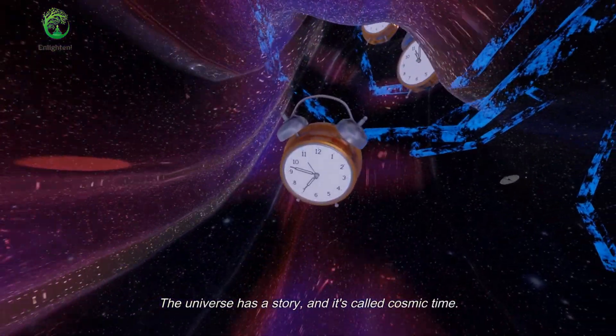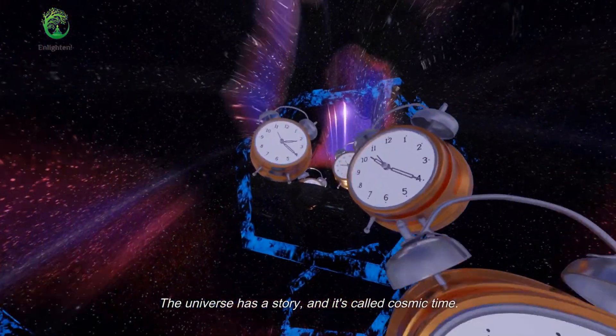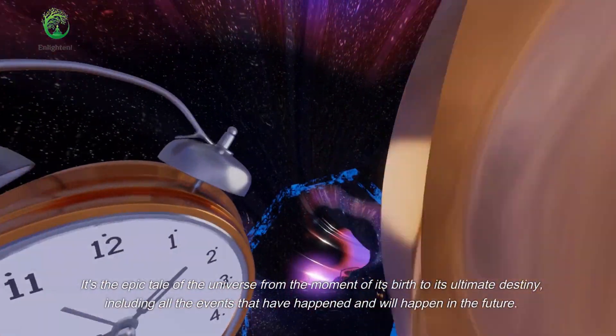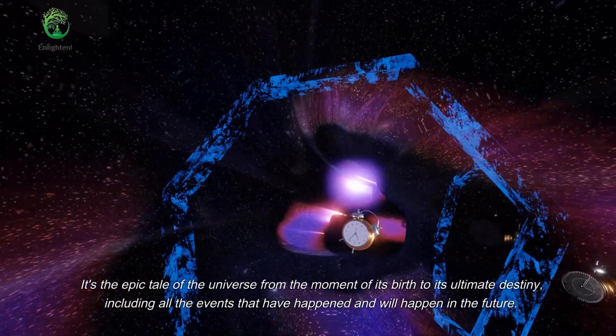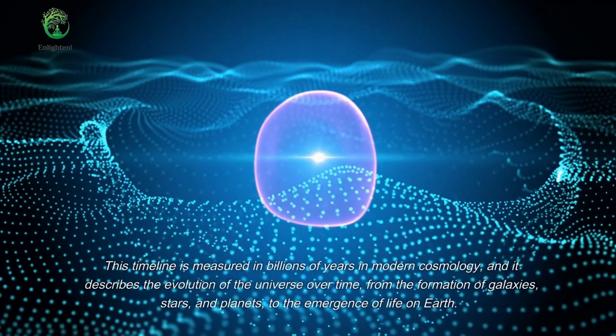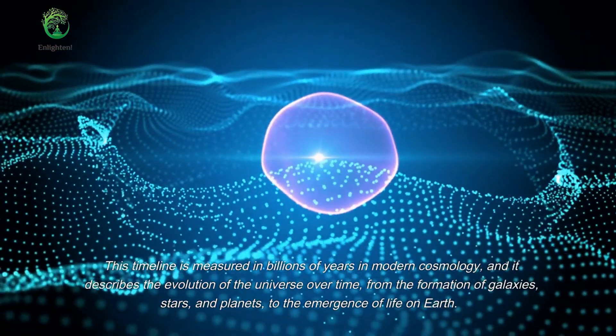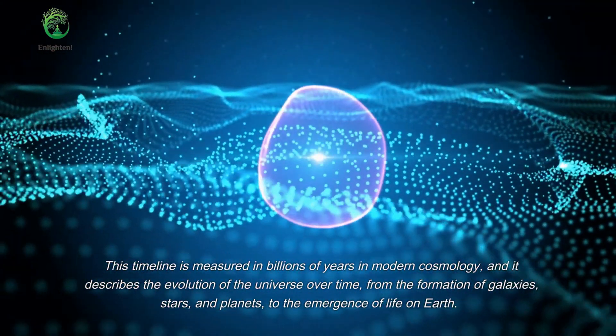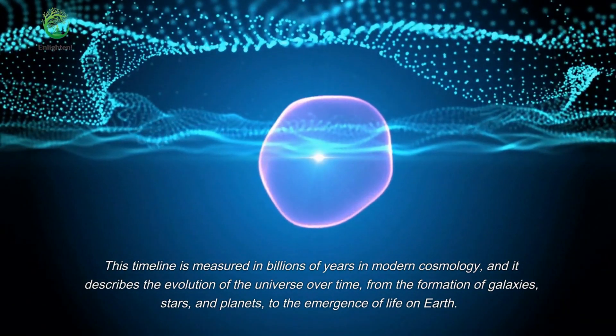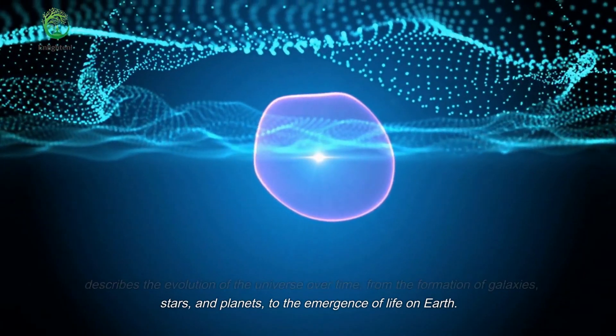The universe has a story, and it's called cosmic time. It's the epic tale of the universe from the moment of its birth to its ultimate destiny, including all the events that have happened and will happen in the future. This timeline is measured in billions of years in modern cosmology, and it describes the evolution of the universe over time, from the formation of galaxies, stars and planets, to the emergence of life on Earth.